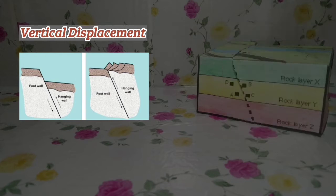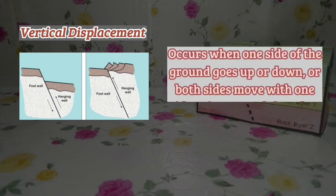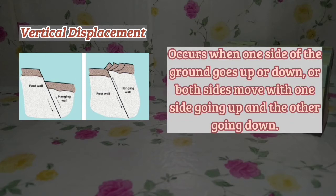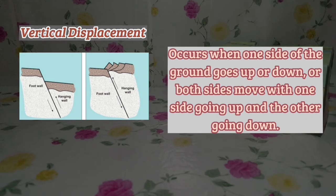A vertical displacement occurs when one side of the ground goes up or down, or both sides move with one side going up and the other going down.